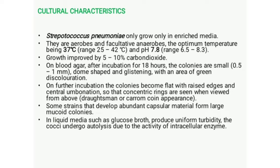Regarding cultural characteristics, Streptococcus pneumoniae have complex growth requirements and cannot grow on ordinary media like nutrient agar; they grow only in enriched media. They are aerobic and facultative anaerobes, with an optimum temperature of 37°C and a range of 25 to 42°C. Their pH range is 6.5 to 8.3, with an optimum of 7.8.